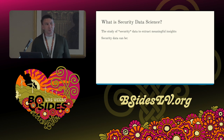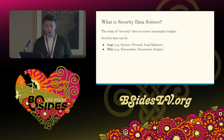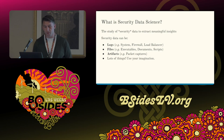What is security data science? The clear definition is the study of security data to extract meaningful insights. Security data usually means the analysis of things like logs — system, firewall, load balancer logs. Files, so this can be executables, documents, scripts, malware, or other artifacts. Packet captures, which don't quite fall into logs or files. If it relates to security and you can extract data from it, you can probably do security data science on it.